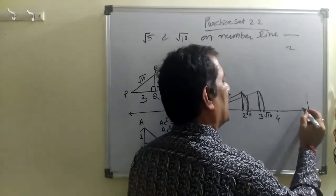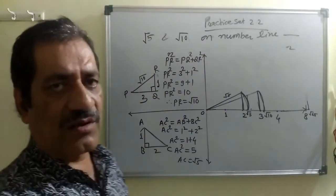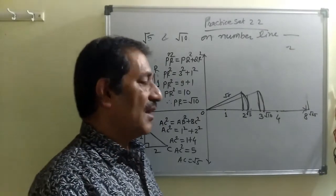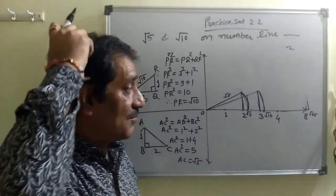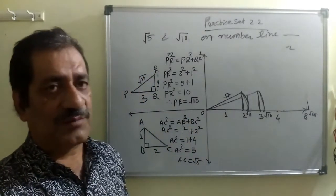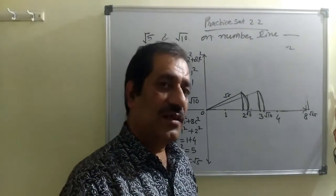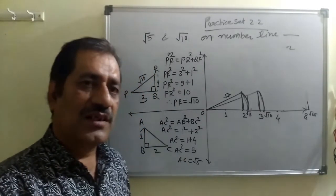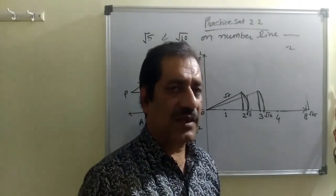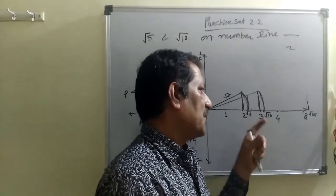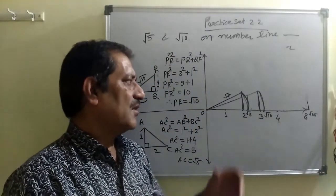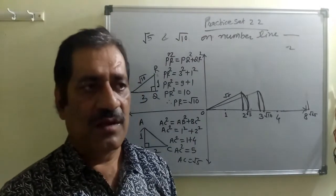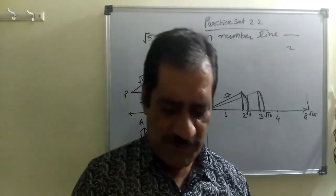We can represent irrational numbers on the number line. We can draw the point on the number line for any irrational number.